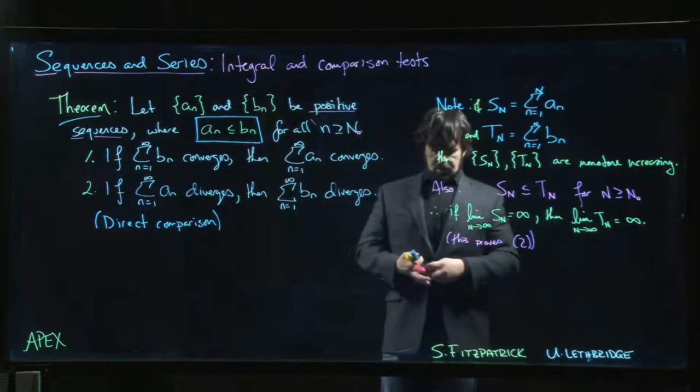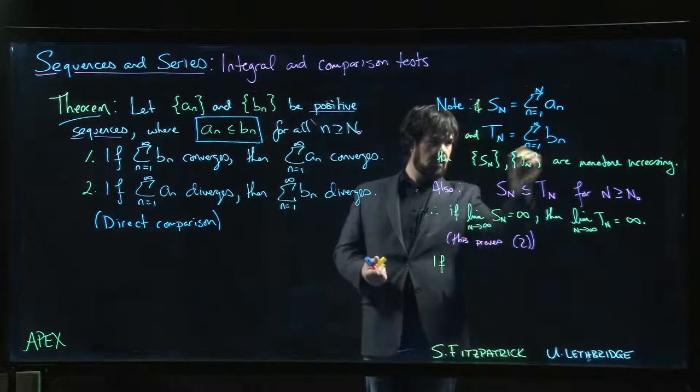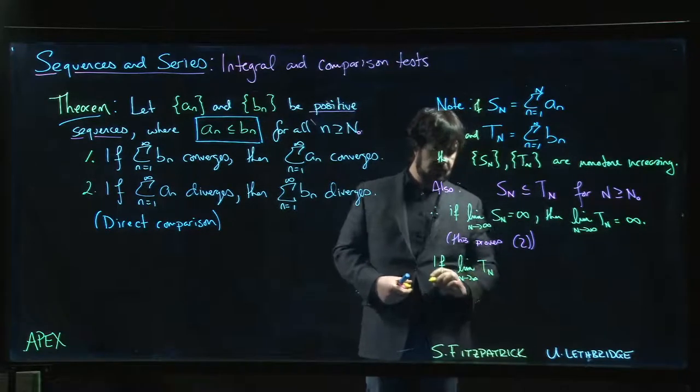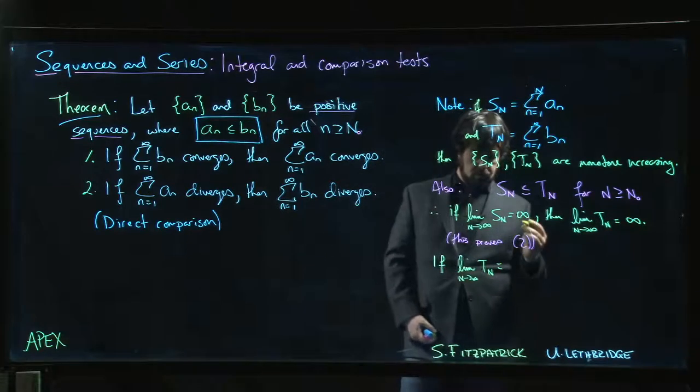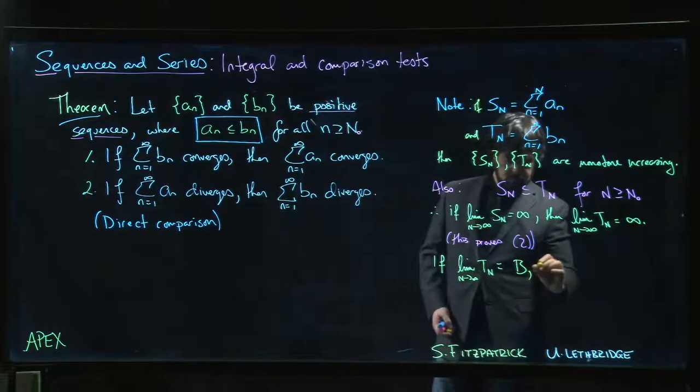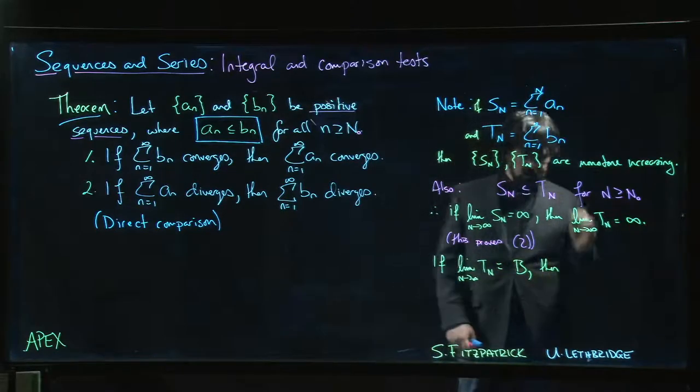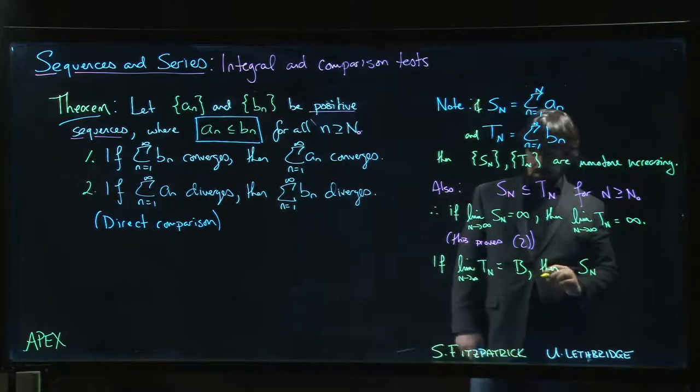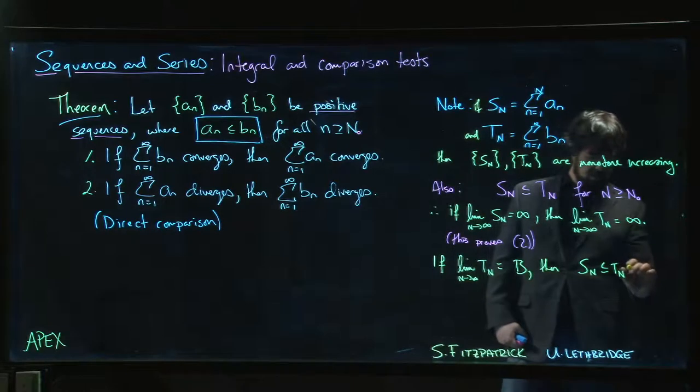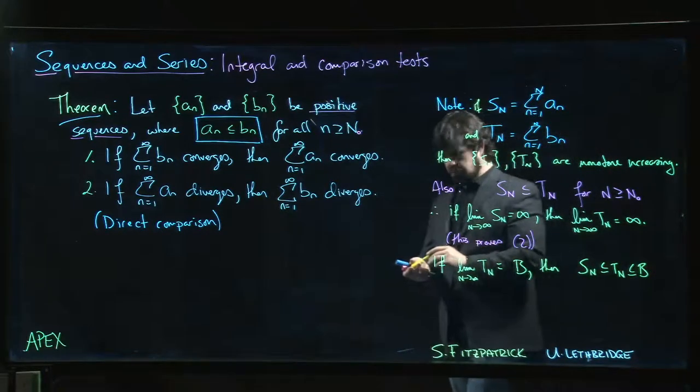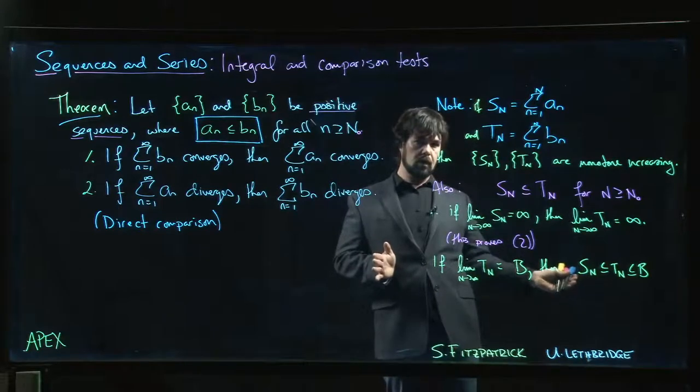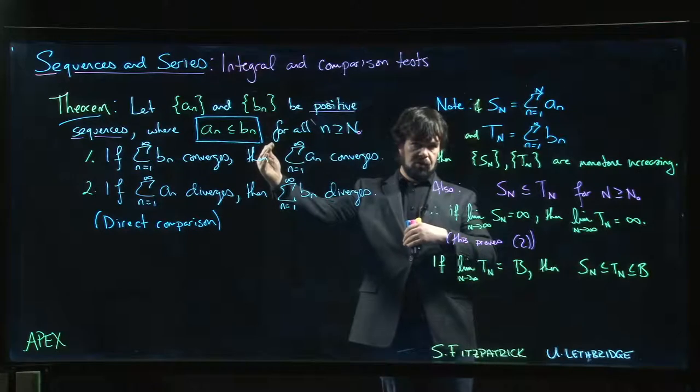On the other hand, if the limit as n goes to infinity of T_n is some value, let's call it B, well what can we say then? We know that S_n has to be less than or equal to T_n, but T_n has to be less than or equal to B. Because if T_n is an increasing sequence, it has to be less than or equal to its limit. Because it gets bigger, as n increases so does T_n.